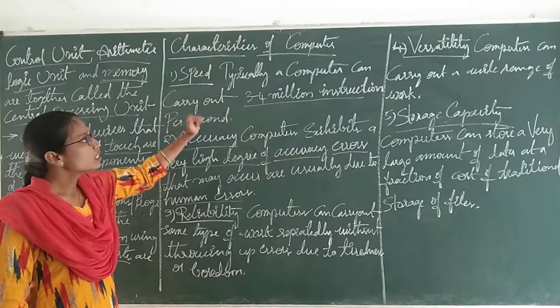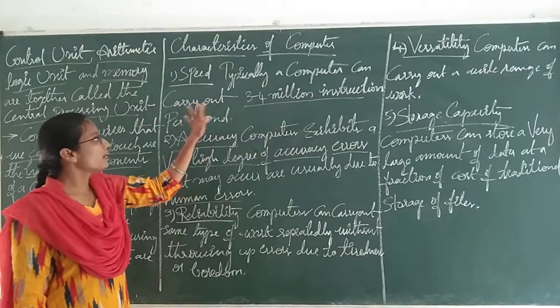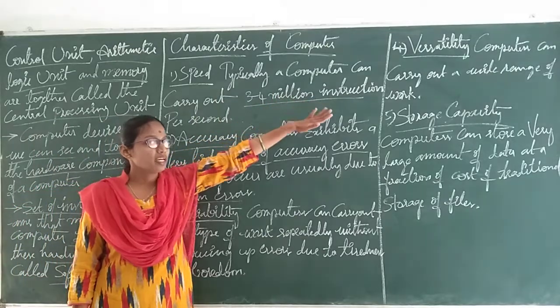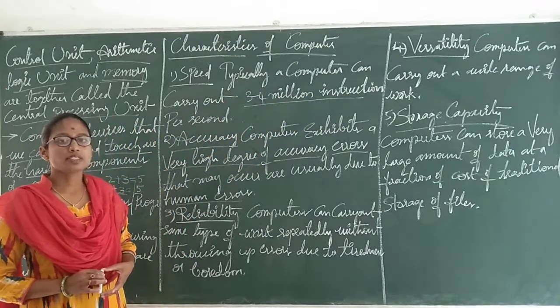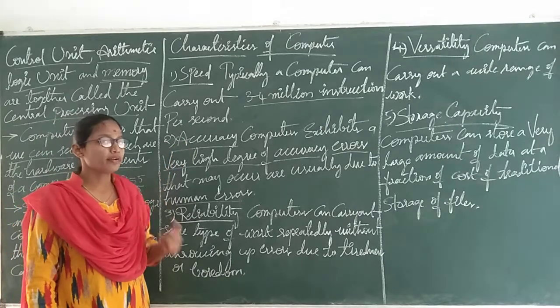Now the characteristics of computers. First is speed. Typically a computer can carry out 3 to 4 million instructions per second.